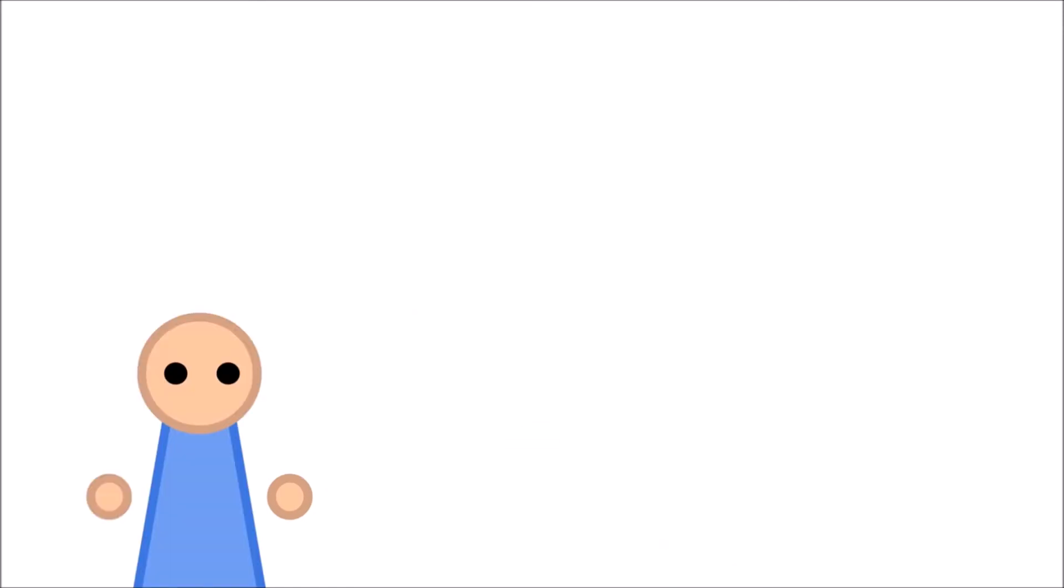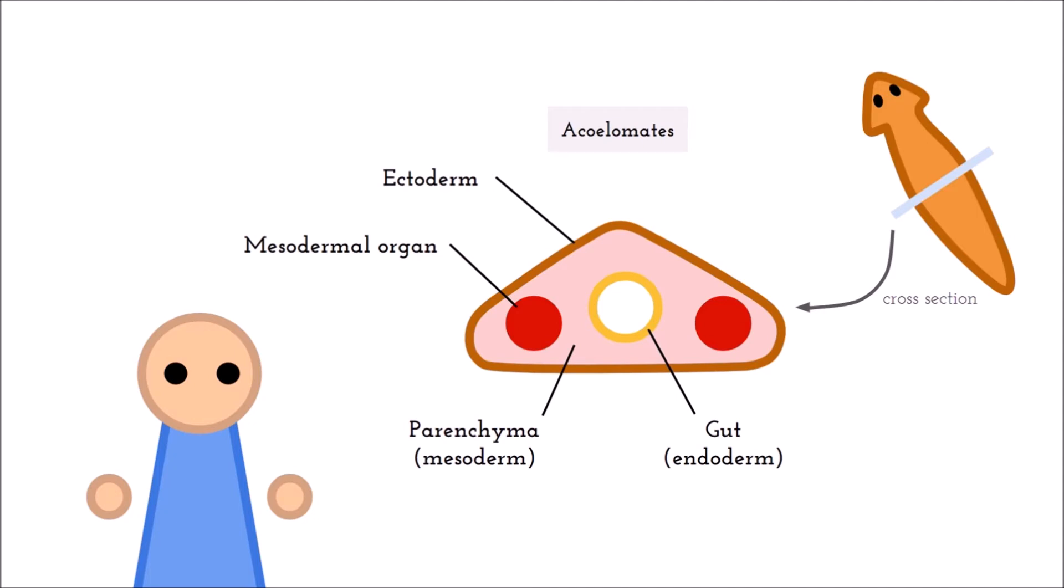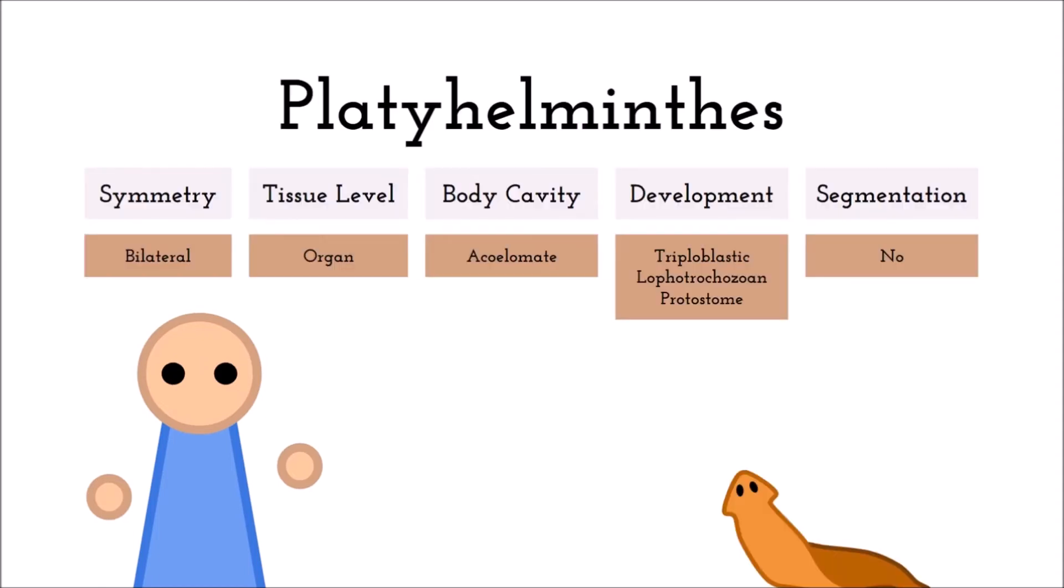We also now see our first triploblastic organism. With three embryonic germ layers, they also have a body cavity. What type of body cavity is based on how the mesoderm, our newest germ layer, surrounds the gut. Platyhelminthes are acoelomates, meaning they lack a coelom, which is a fluid-filled cavity between the gut and body wall. More on their embryonic development, platyhelminthes are Lophotrochozoan protostomes. Being a protostome, their blastopore develops into a mouth with determinant spiral mosaic cleavage of cells during their embryonic stage. Lophotrochozoans are organisms that have a lophophore or trochophore, the former being a horseshoe-shaped, tentacle-covered feeding organ, the latter a specialized free-swimming larval stage. Finally, platyhelminthes are not segmented.